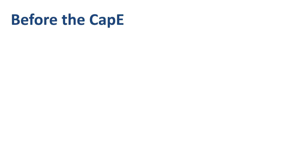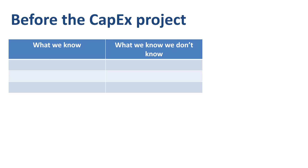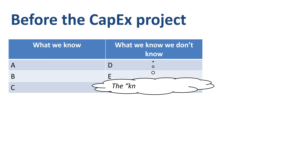When you try to manage risk and uncertainty around a CAPEX project, you should be able to list items in two categories prior to making the investment: the category called 'What we know,' and the category called 'What we know we don't know' — the latter also called the known unknowns.